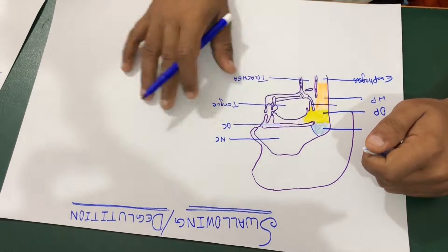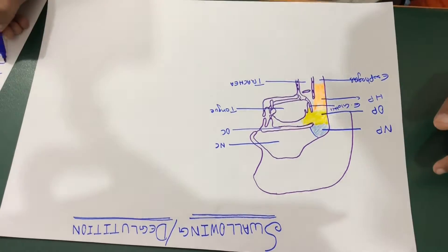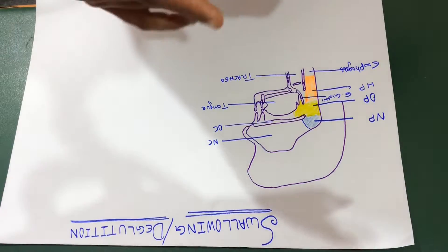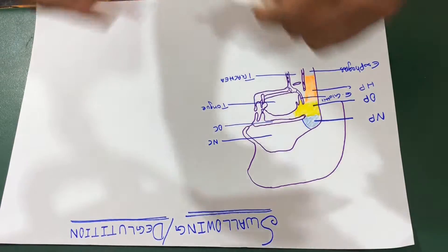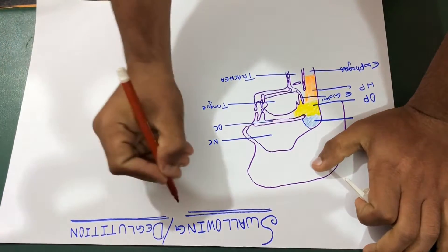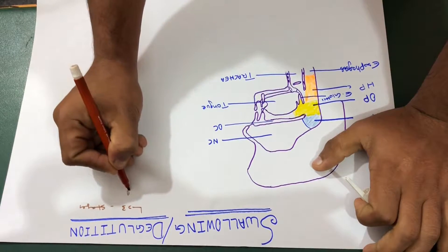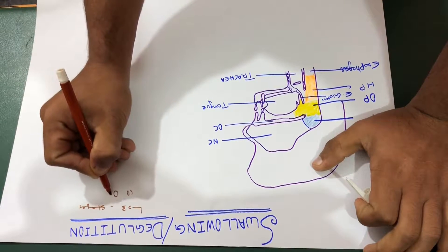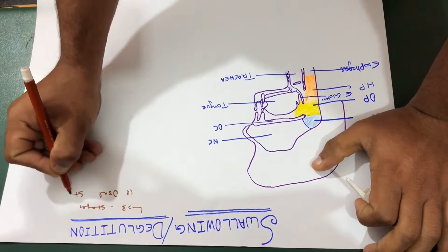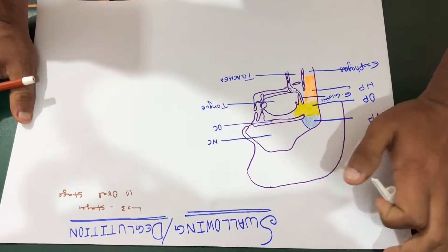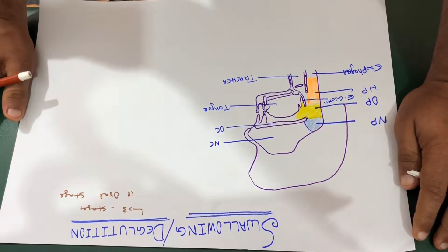Remember these structures because we are going to use them in explaining the swallowing or deglutition. So I have talked about that deglutition or swallowing is divided into three stages. The first stage is the oral stage, the second is the pharyngeal stage and the third one is the esophageal stage.